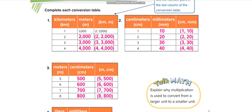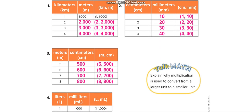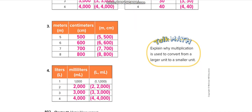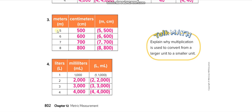Now for centimeters to millimeters — you know one centimeter equals 10 millimeters. The table heading shows centimeters (cm) and millimeters (mm): 1 and 10, 2 and 20, 3 and 30, 4 and 40. Similarly, meters to centimeters: multiply by 100; and liters to milliliters: multiply by 1,000.